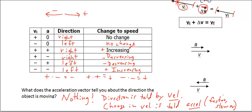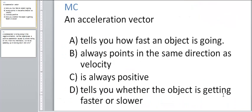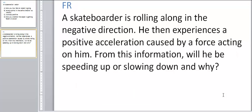I have two practice problems for the video reflection. First, multiple choice: An acceleration vector — A) tells you how fast an object is going; B) always points in the same direction as velocity; C) is always positive; or D) tells you whether the object is getting faster or slower. Put your answer on your paper and enter it in the video reflection. For the free response: A skateboarder is rolling in the negative direction. He then experiences a positive acceleration caused by a force acting on him. Will he be speeding up or slowing down, and why? Go ahead and type in your response.